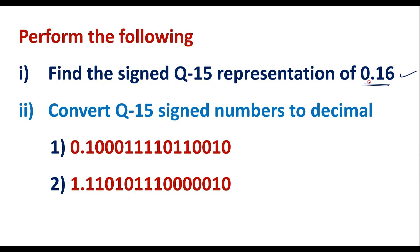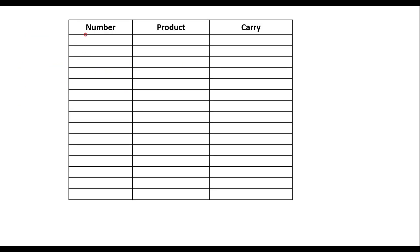To convert the given number into signed Q15 representation, we multiply 0.16 repeatedly by 2, fifteen times. So the first time we multiply 0.16 by 2, it gives the product 0.32. The integer part, 0, is written as the carry.